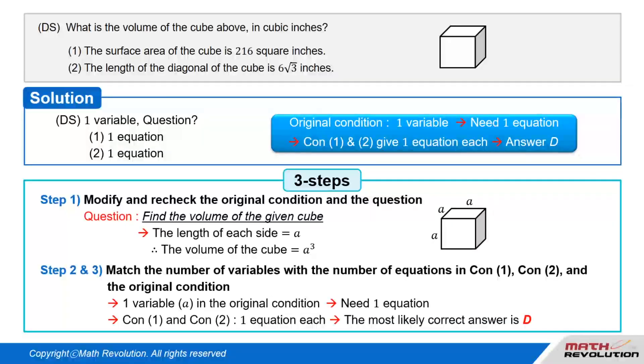Follow the second and the third step from the original condition. We have one variable, A. To match the number of variables with the number of equations, we need one equation. Since conditions 1 and 2 will provide one equation each, D would most likely be the answer. It is 60% likely that the answer would be D if a question like this appears in the actual exam, because the number of variables is 1.